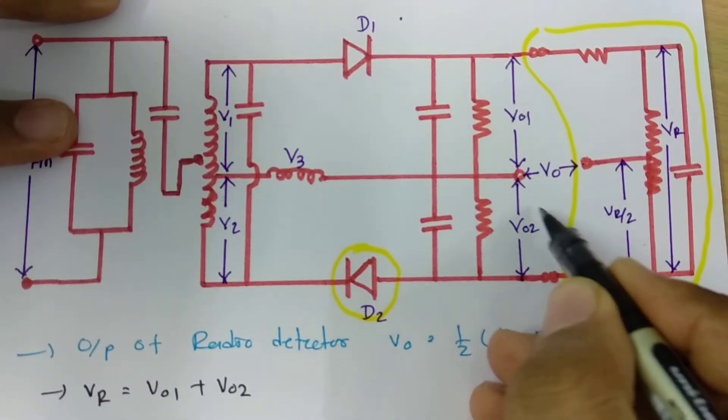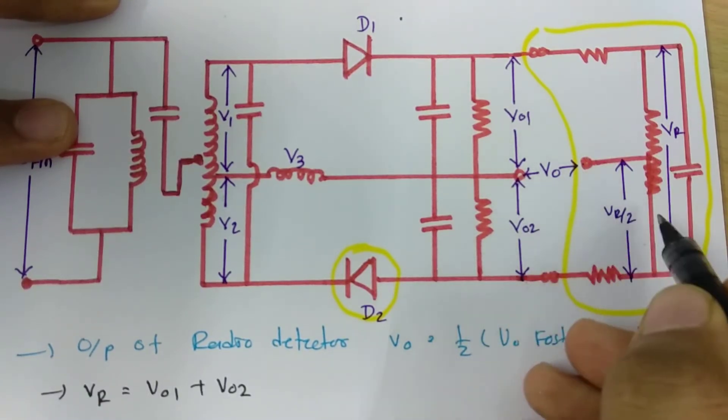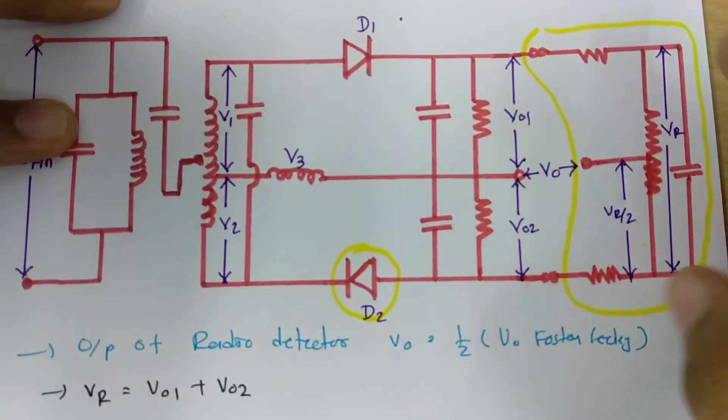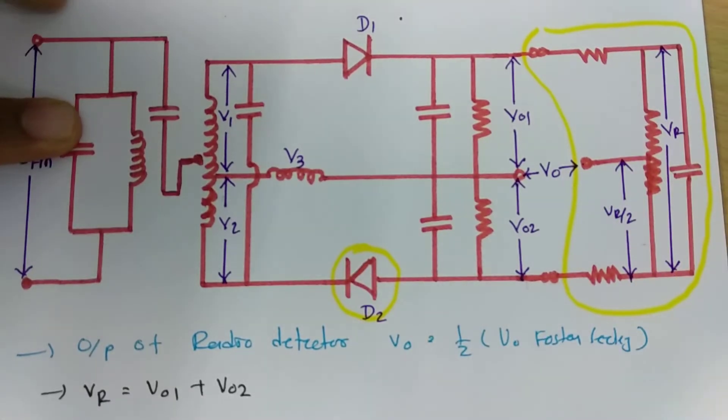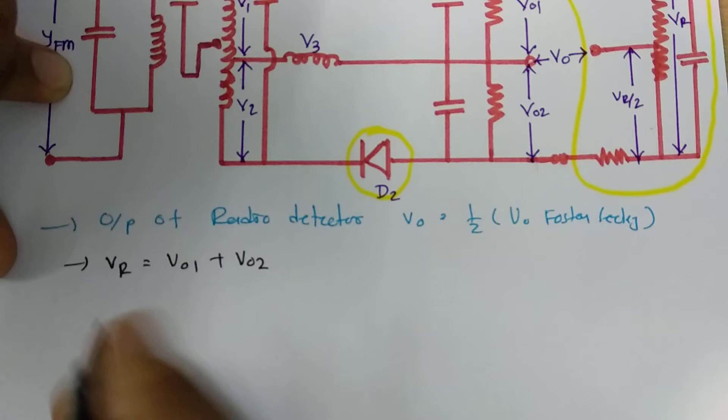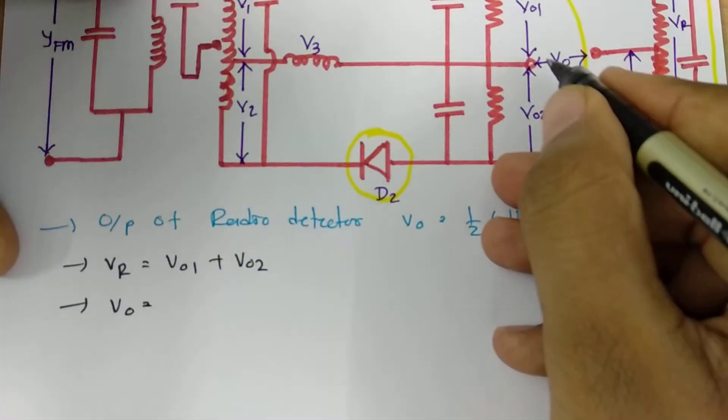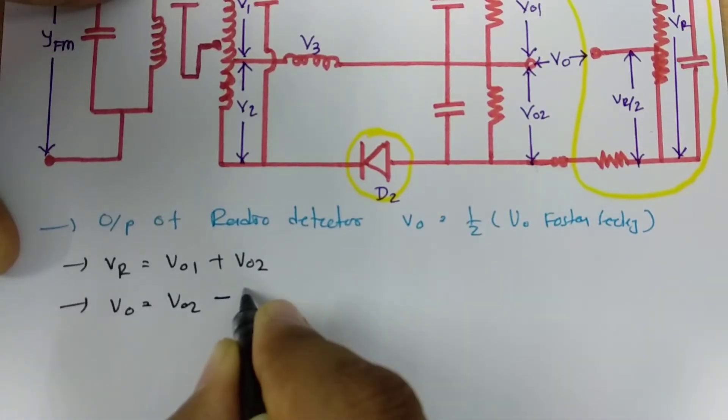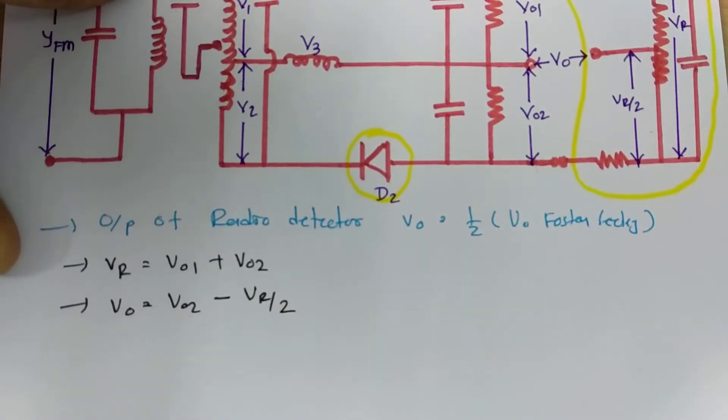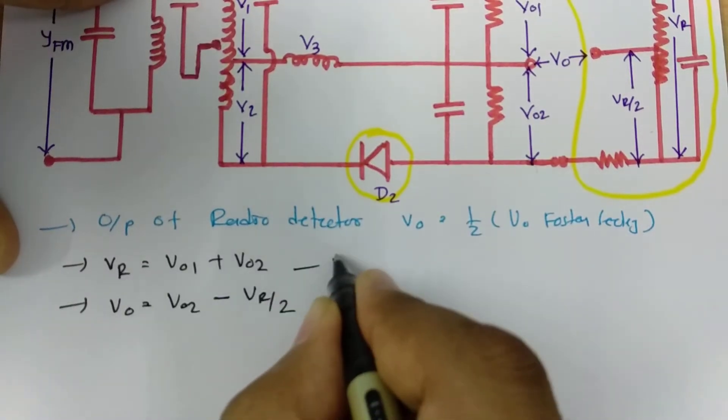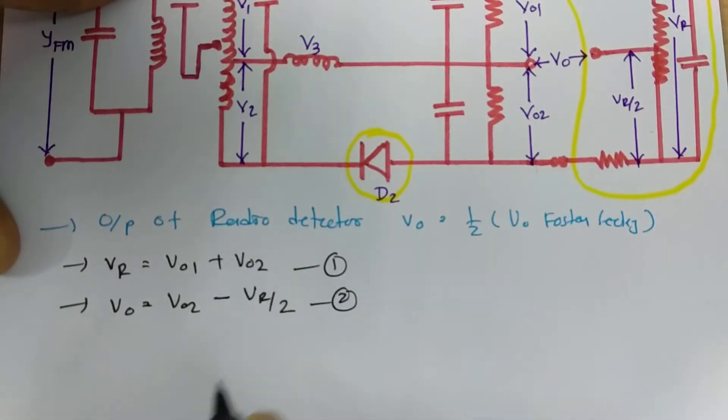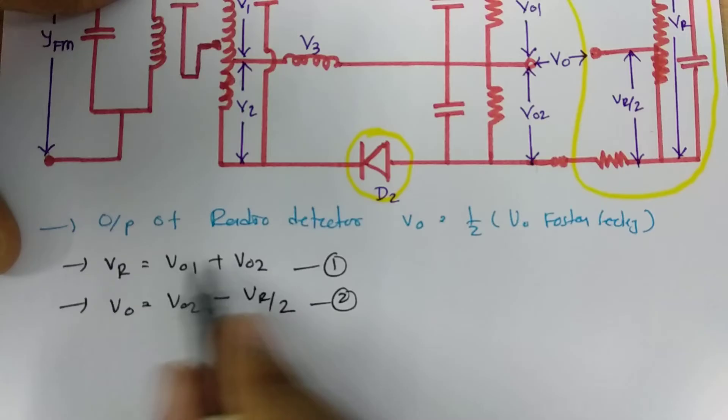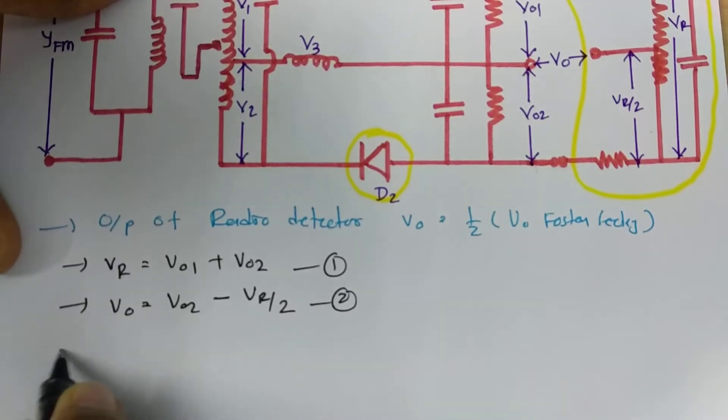Now see at this terminal voltage is V02 and at this terminal voltage is VR by 2. V02 minus VR by 2. Let us say this is equation 1 and this is equation 2. Now if we place this equation 1 in equation 2...